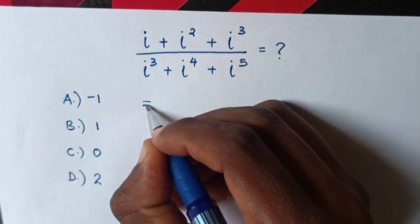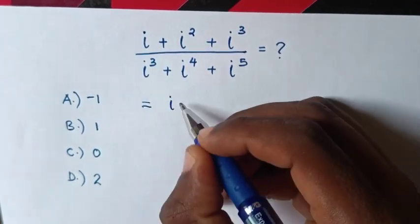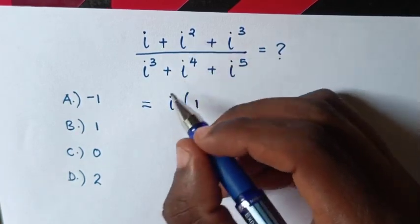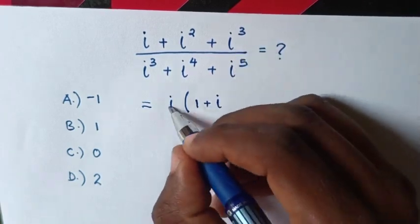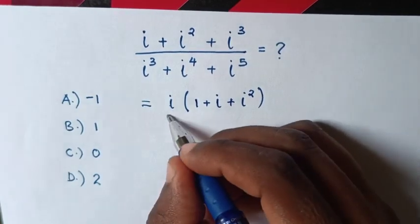This is equal to... in the numerator, i is common, so we take i out of the bracket. This divided by this is 1, then this divided by this is i, so it will be plus i, then this divided by this is i², so plus i² in the bracket, over...